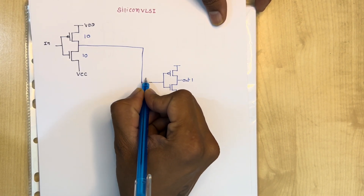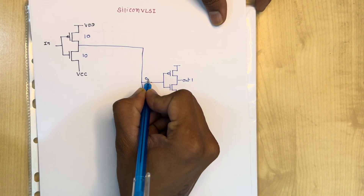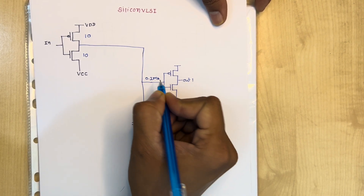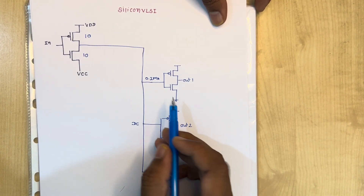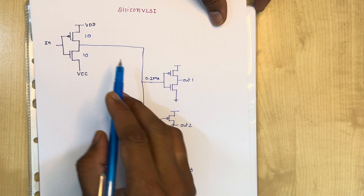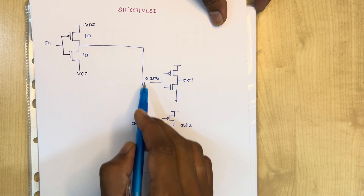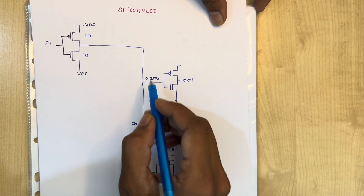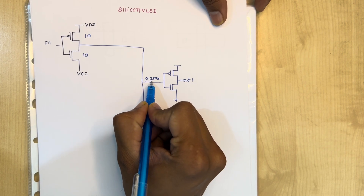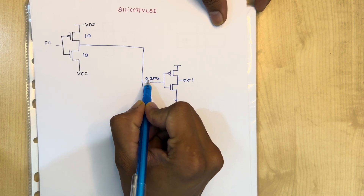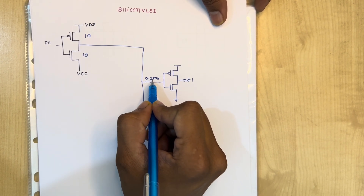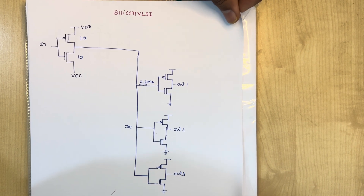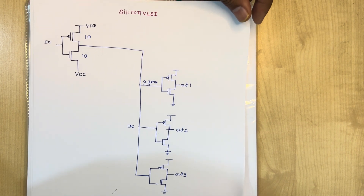Let's assume the current flowing here is 0.1 milliampere. According to 0.1 milliampere, you have to design the metal width in the layout. Generally you will design the Metal 1 width based on 0.1 milliampere. Let's see how this layout looks.